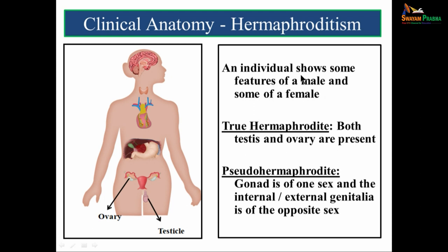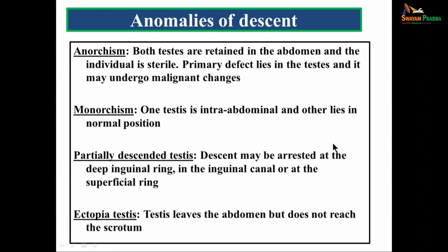Hermaphroditism: an individual shows some features of both male and female. In true hermaphrodites, both testis and ovary are present. In pseudo-hermaphrodites, the gonad is of one sex while the internal or external genitalia is of the opposite sex. Anomalies of descent include anorchism, monorchism, and partially descended testis. In anorchism, both testes are retained in the abdomen and the individual is sterile; the primary defect lies in the testis and it may undergo malignant changes. In monorchism, one testis is intraabdominal and the other is in normal position.